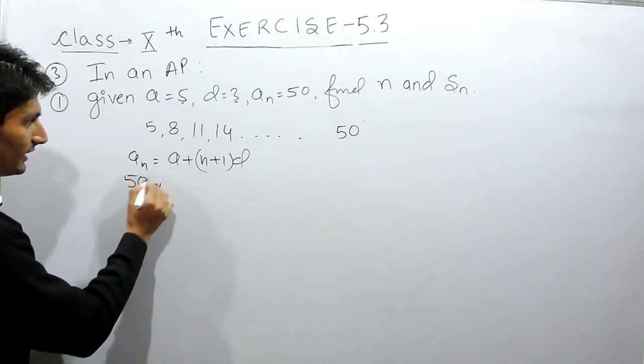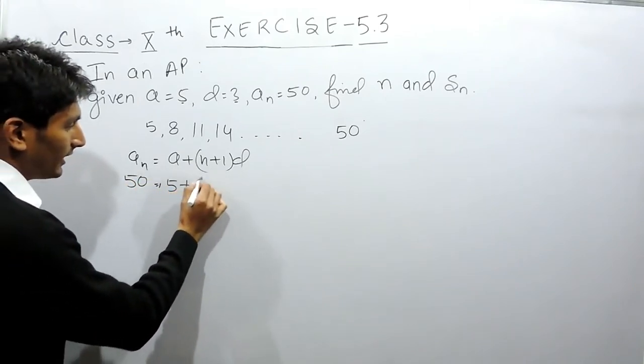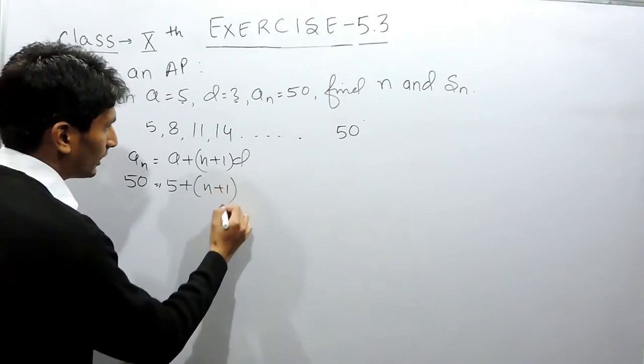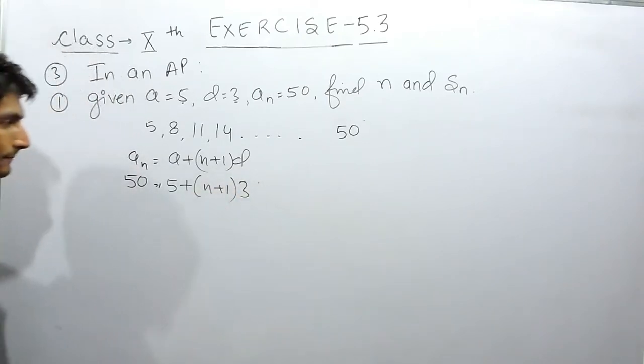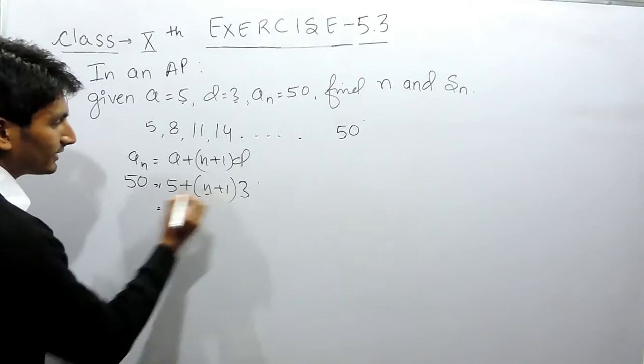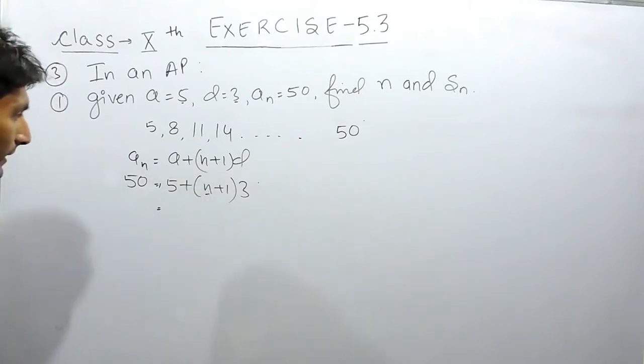And here the last term is given to you as 50. The first term is 5, and the number of terms you have to find out, and here the common difference is 3. Solving this we will get the number of terms in this AP.